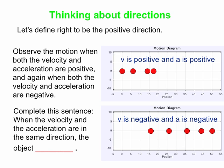So what's the best way to complete this sentence? When the velocity and the acceleration are in the same direction — that was true for both of these examples: both positive (both to the right) in the top picture, and both negative (both to the left) in the bottom picture — when that is true, the object speeds up.